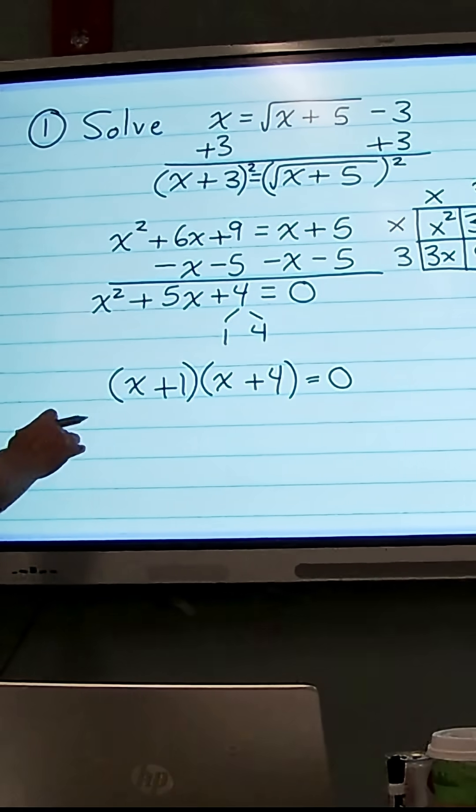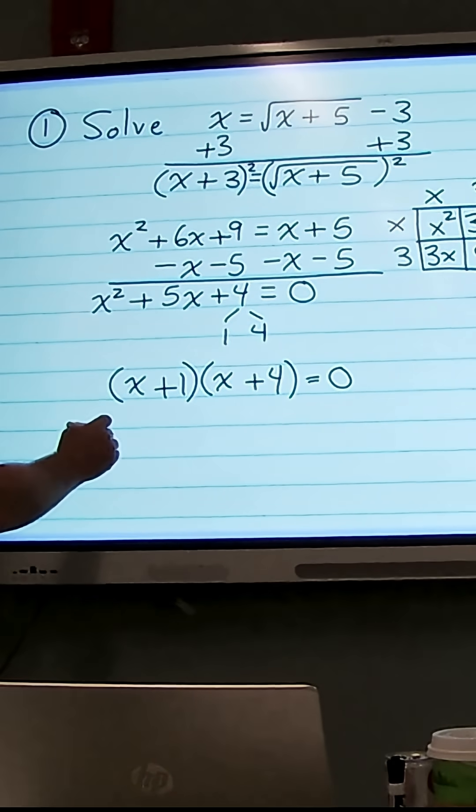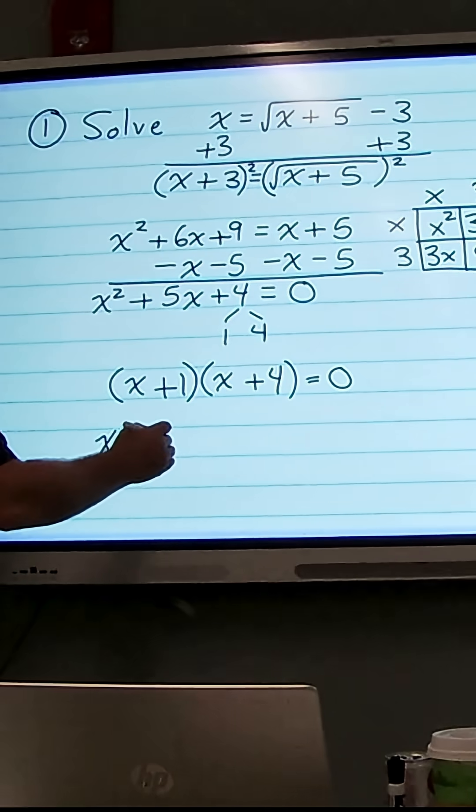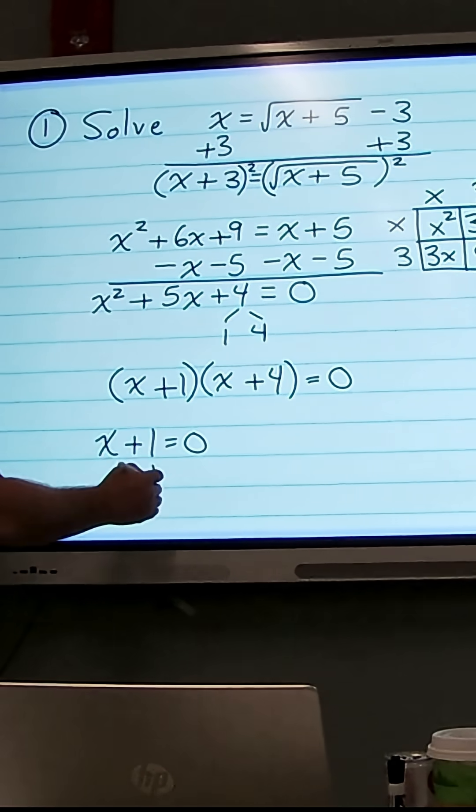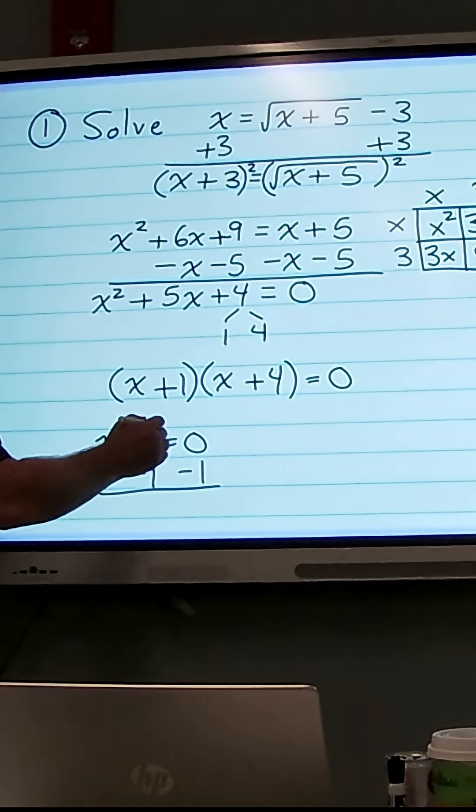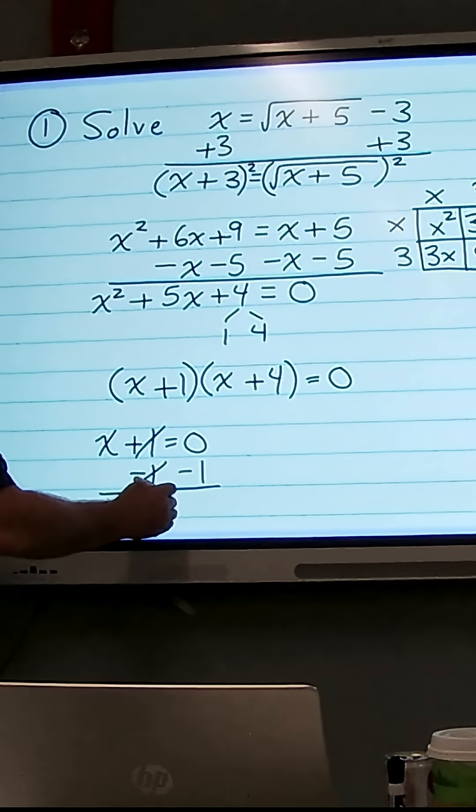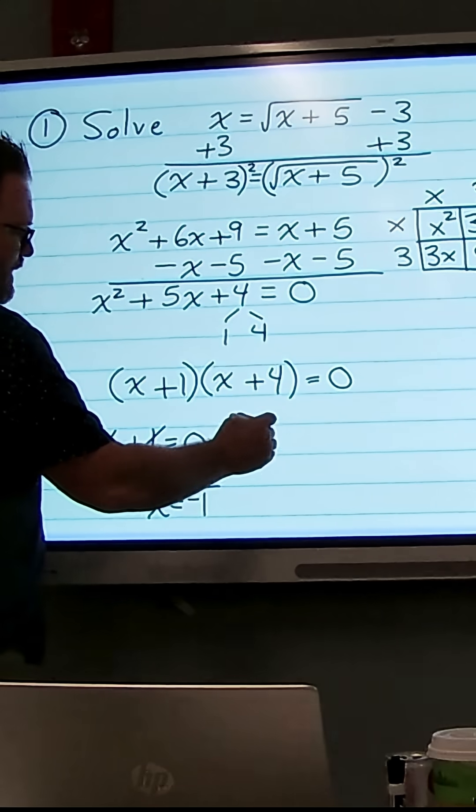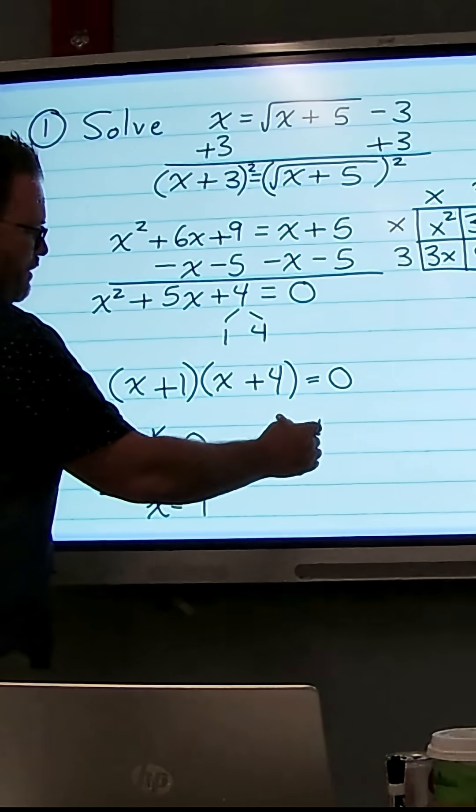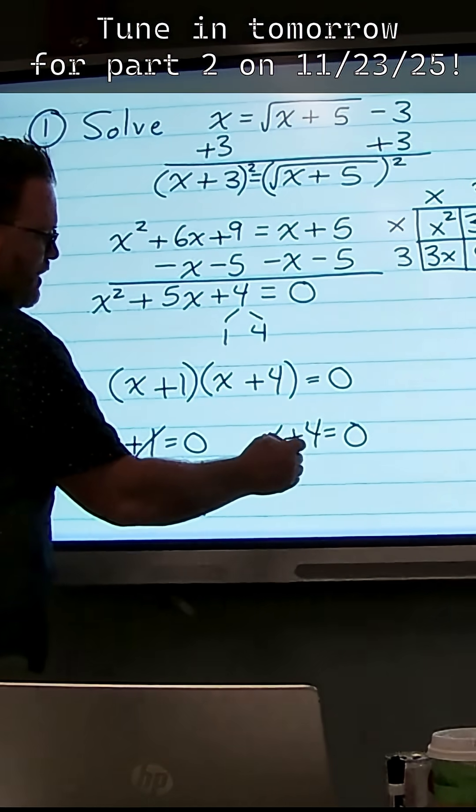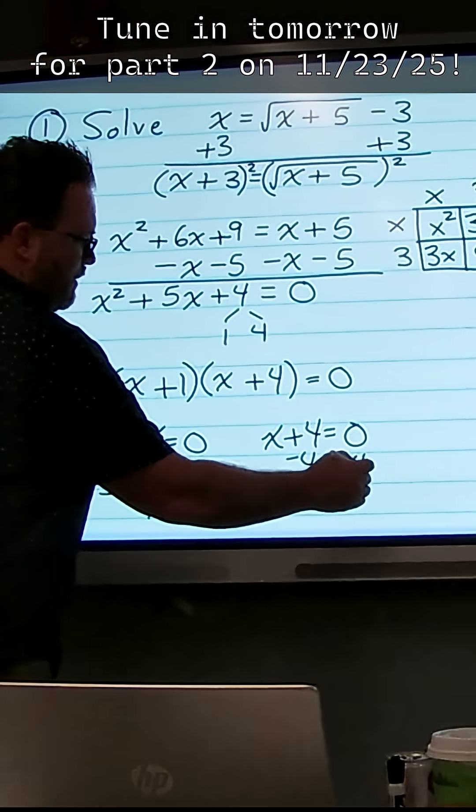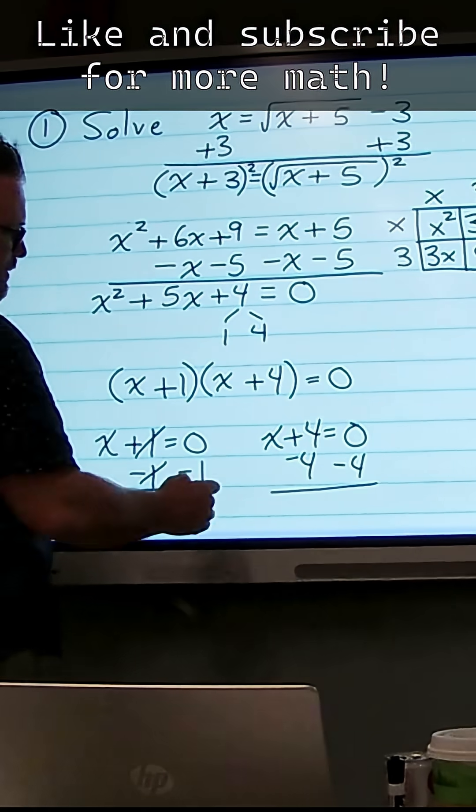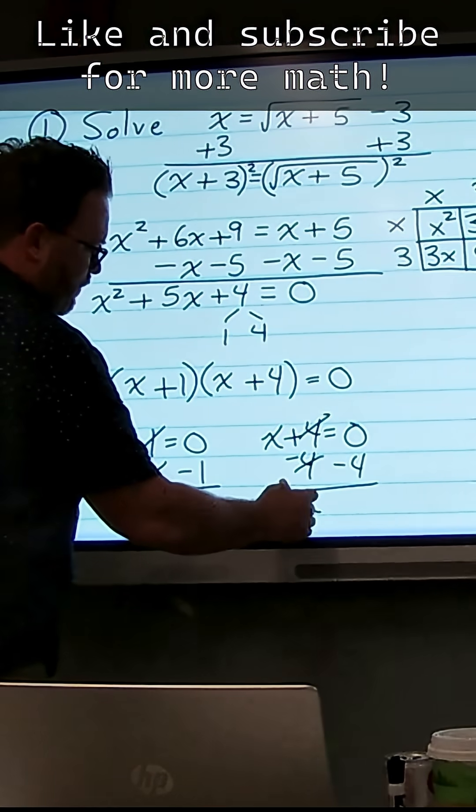I'm going to use the 0 product property to set each of these factors equal to 0. So x plus 1 equals 0. We'll subtract 1 from both sides and get one of our potential solutions as x equals negative 1. We'll also set x plus 4 equal to 0, and subtract 4 from both sides to get our other potential solution as x equals negative 4.